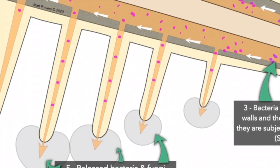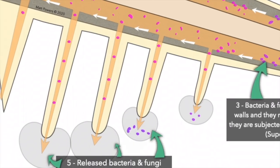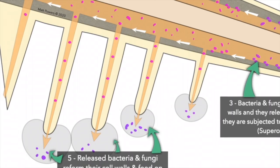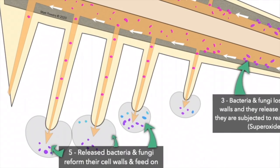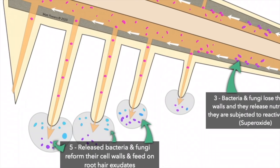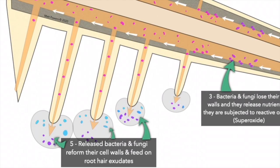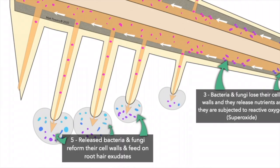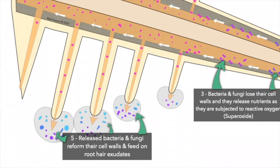...they are regrowing their cell walls and eventually get squeezed back out of the root hair, then repopulate, regrow, and reproduce in the exudates released at the tip of the root hair. These bacteria and fungi for the most part are digested by the root, but the ones that are not digested are regrown, restored, and repopulated through root hairs and at root hair tips — some are destroyed, some are drained.